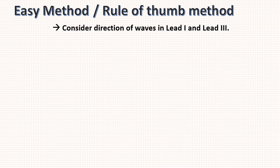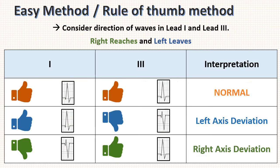Now the second method, which is more easy but less accurate than the first. This method is also known as the rule of thumb method. You need to consider the direction of waves in lead 1 and lead 3. Just remember the mnemonic: right reaches and left leaves. That is, if the direction of waves in lead 1 are negative and in lead 3 are positive, they are reaching each other, and so from our mnemonic, there is right axis deviation.